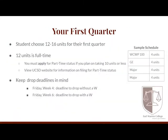For your first quarter, plan to enroll in 12 to 16 units, which is usually three or four classes. A sample schedule might include Writing 100, one GE course, and one or two courses for your major. 12 units is considered full-time and all students are expected to be enrolled in at least 12 units each quarter, unless approved for part-time status. Many students take 16 units to comfortably meet graduation requirements within two years, and it also gives you the option to drop one class and still remain enrolled in 12 units.